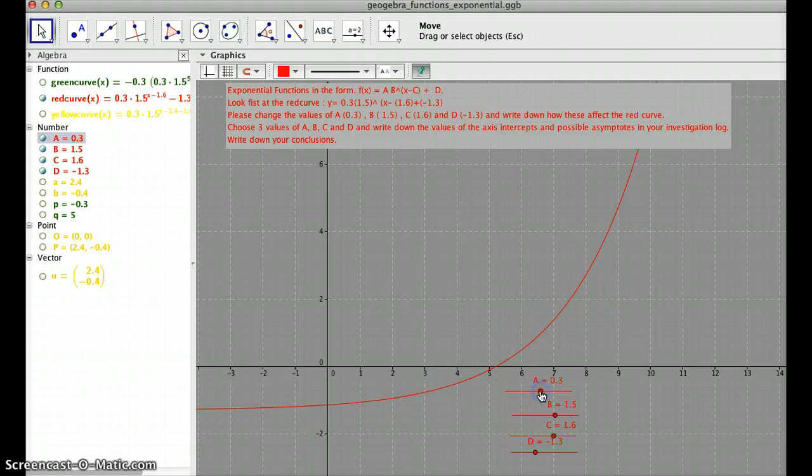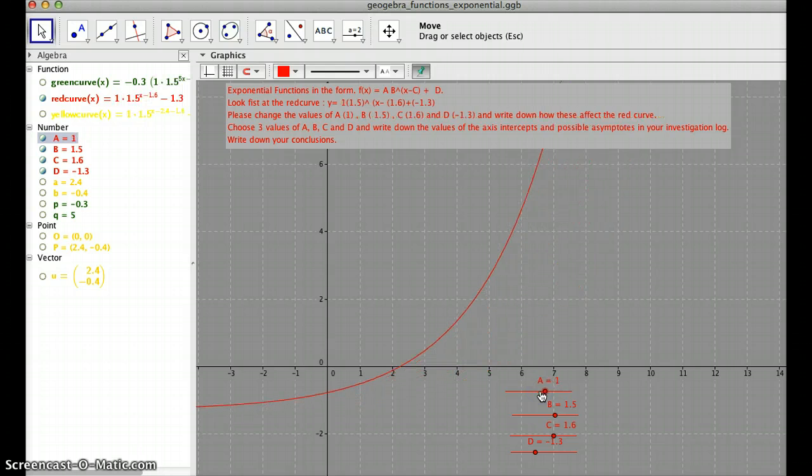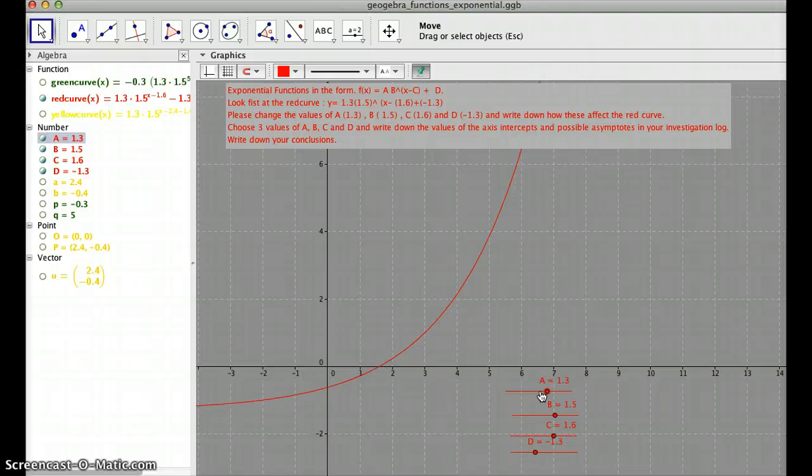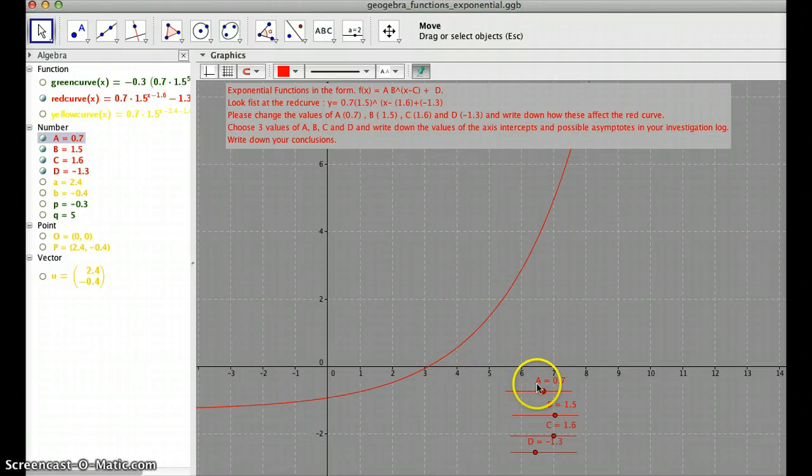So a, for example, as we move it up, we can see that we're just multiplying the exponential. We can see how it does. Please note how a makes this point and this point different. Remember that these are the axis intercepts.